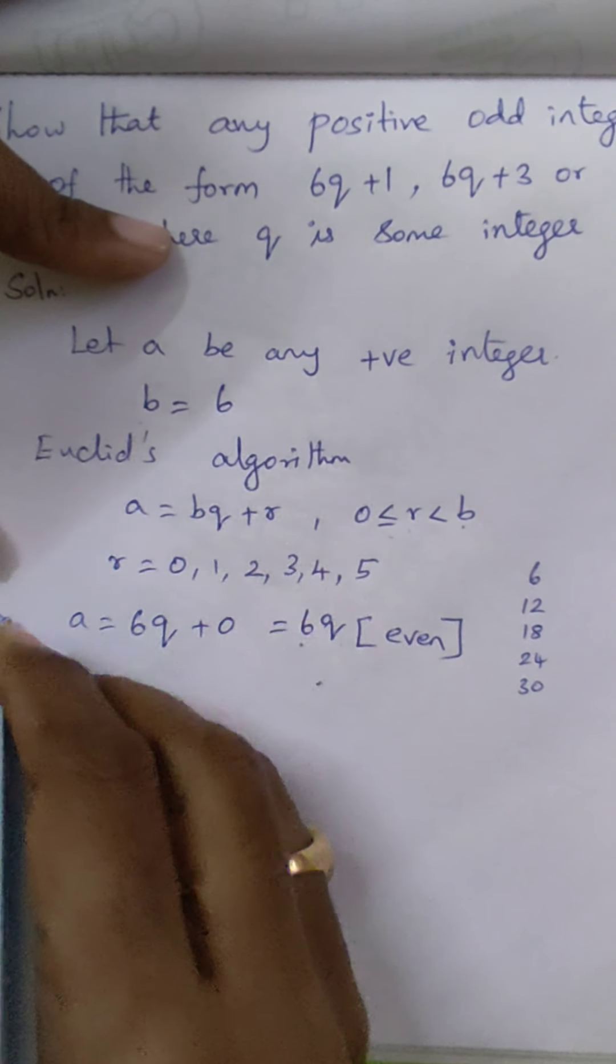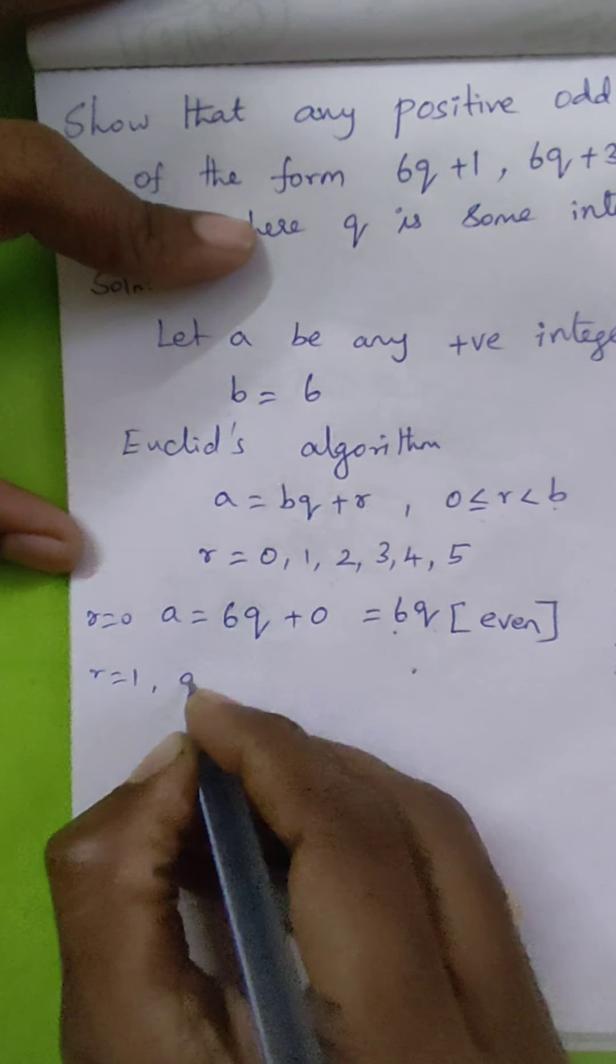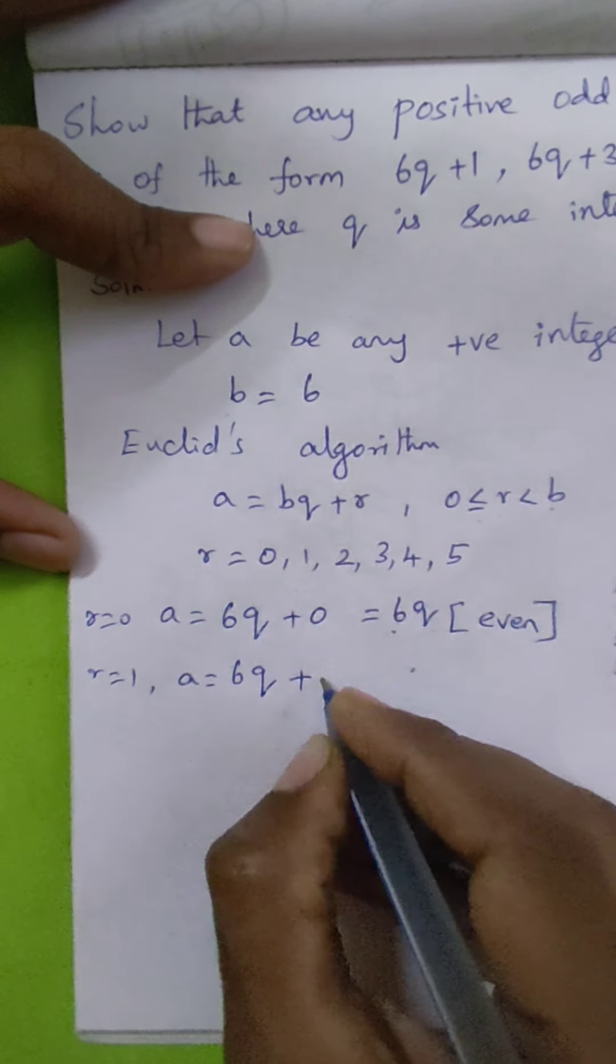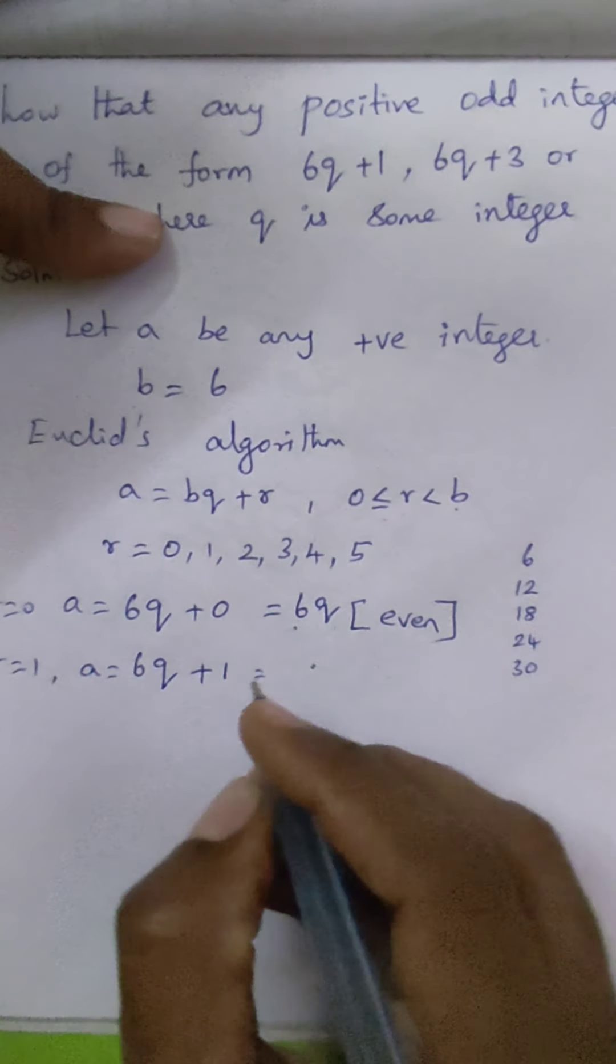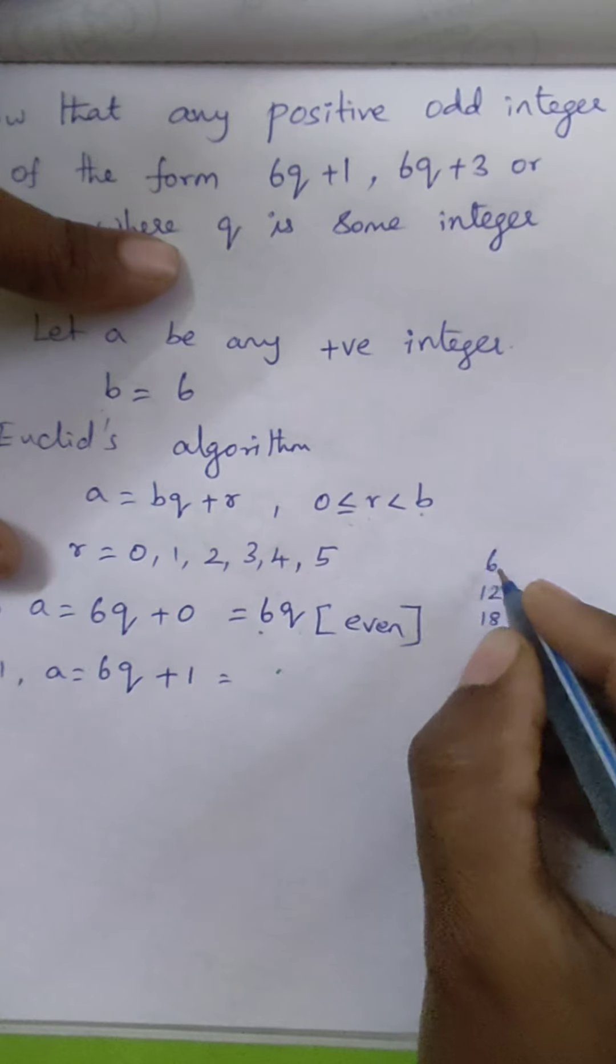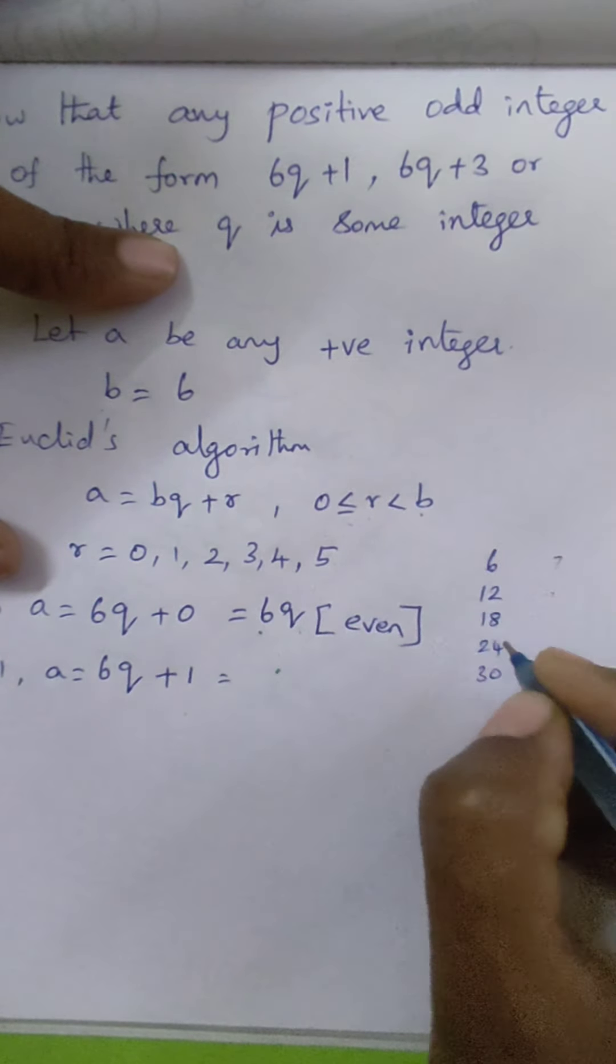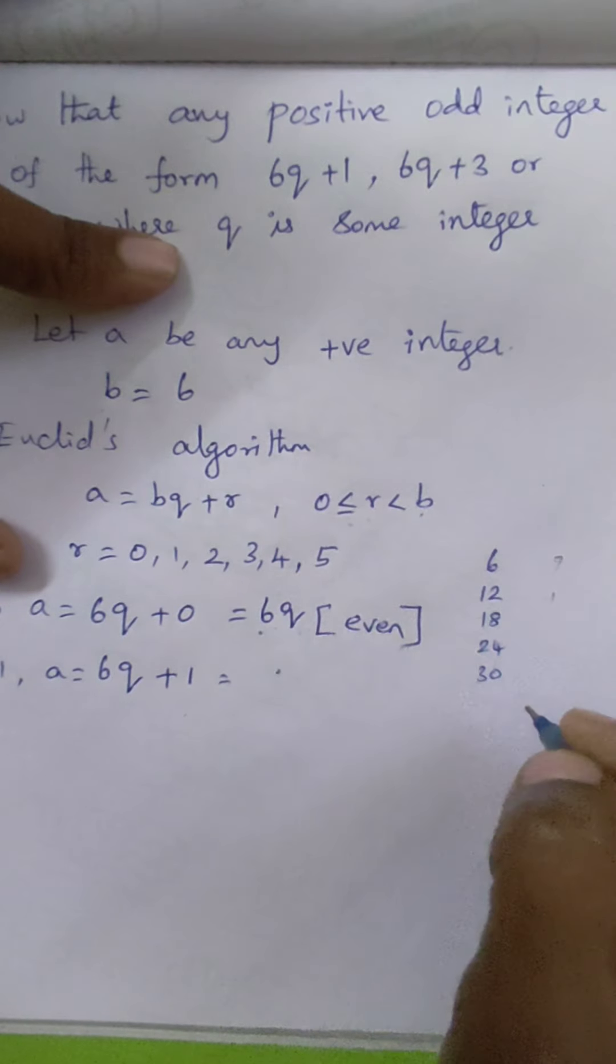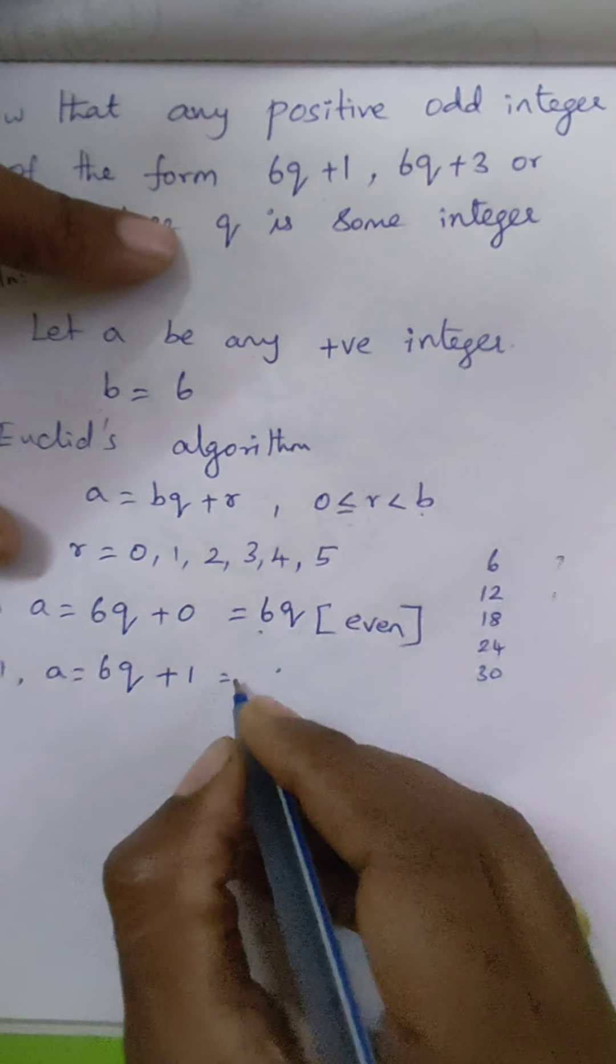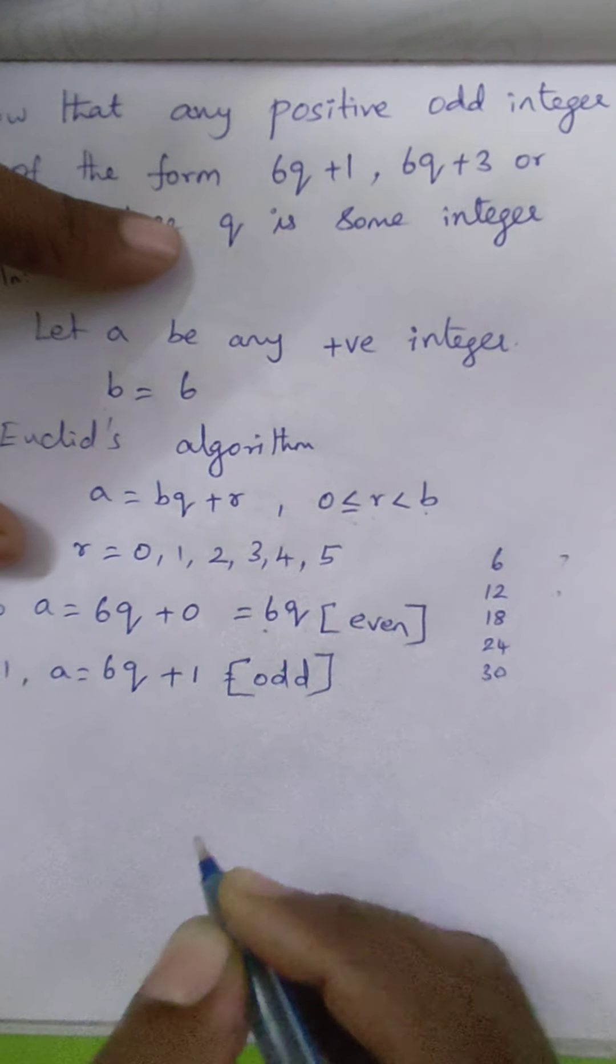Next, when r equals 1, a equals 6q plus 1. Keeping on adding 1 to multiples of 6, we get 7, 13, 19, 25. So all these values are odd. Therefore, 6q plus 1 is odd.